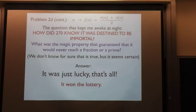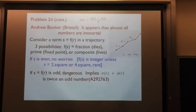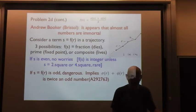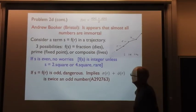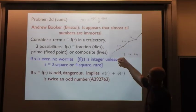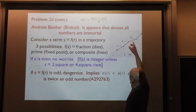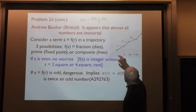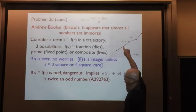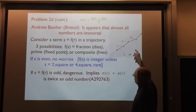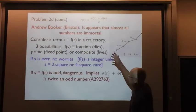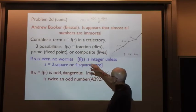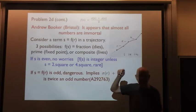His argument goes like this. Let's walk along a trajectory. Say we've got three successive terms R, S, and T, and let's look at S — the result of applying our map to R. After S, we hope to go to T, but we could get a fraction and die, we could get a prime which would be a fixed point, or it could be a composite number, which means we live one more day and go on.